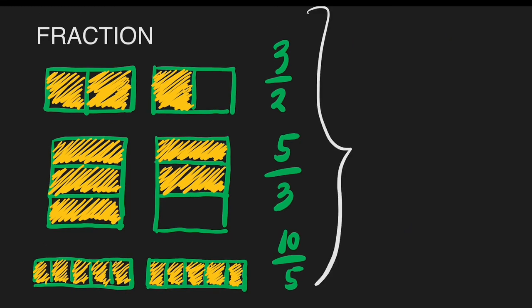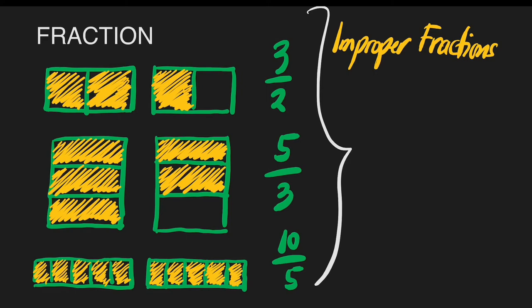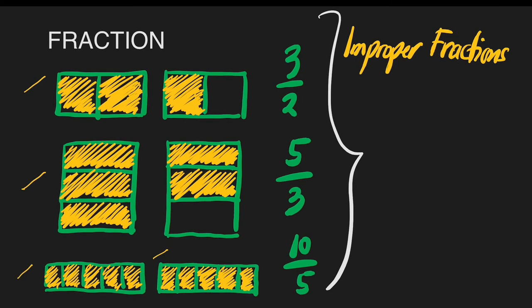These fractions are called improper fractions. What are improper fractions? These fractions are equal to one or more than one. If you notice, in the first fraction we even shaded more than one whole. In the second, also more than one whole. And in the third, we even shaded two wholes. And if we take a look at the numerators, they are all bigger compared to their denominators.